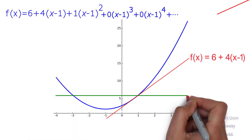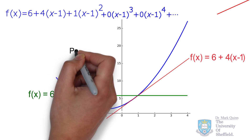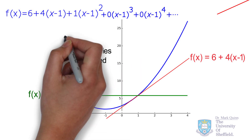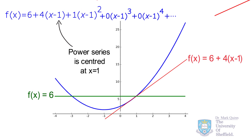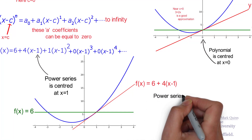Again, to intuitively understand what the different terms contribute to the power series, we can simply remove each term and compare the curves. Keeping the first two terms as shown in red gives us a linear function, while just the first term provides us with a constant value of 6. We can see now that all of these terms are centered or intersect at x equal to 1, and indeed we can center the power series wherever we like.